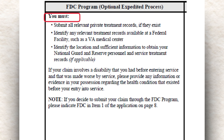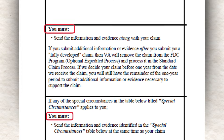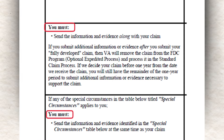You must submit all relevant private treatment records if they exist, identify any relevant treatment records available at federal facilities such as VA medical centers, and identify the location and sufficient information to obtain your National Guard and reserve personnel and service treatment records. The next section says to send the information and evidence along with your claim. When I filed my last fully developed claim, I did send some information, and I'll explain that in the scenario I'm going to give you once I get through all these slides.